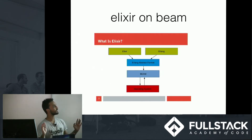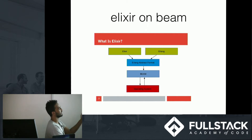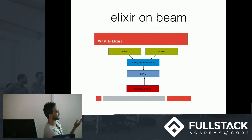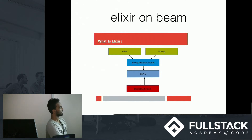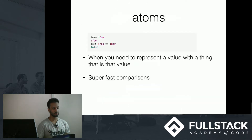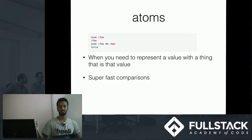So where does Elixir come in to all of this? Elixir is compiled down to Erlang abstract format — also known as BEAM, which is the Erlang virtual machine. So Elixir uses the Erlang VM, which is why it has this powerful concurrency model.